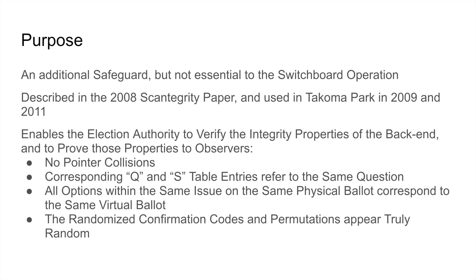It would be bad if, for example, C9 were a valid confirmation code for the first question of every ballot whose serial number is divisible by 8. These are all things that, in theory, are verified by the ballots spoiled during the election.